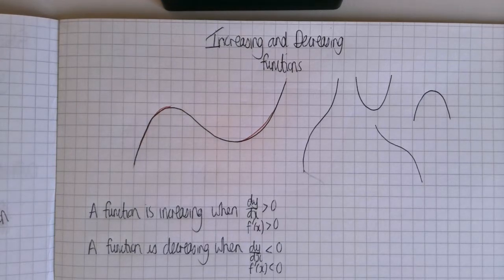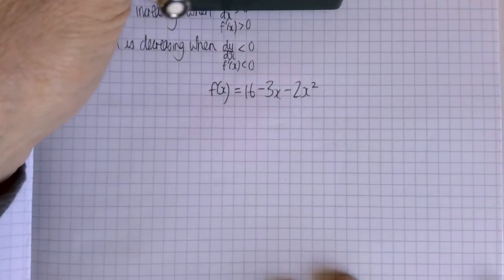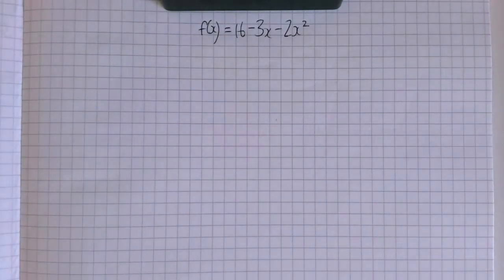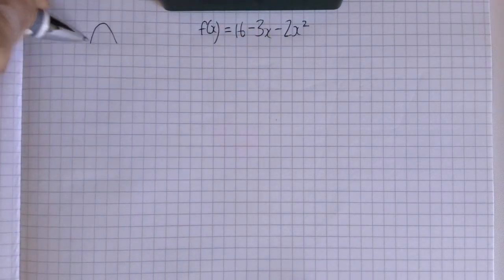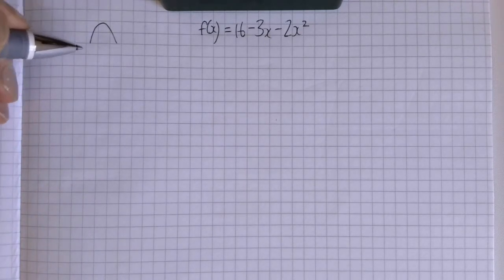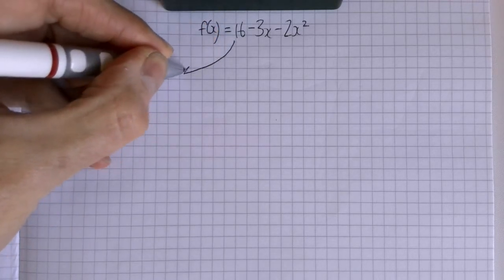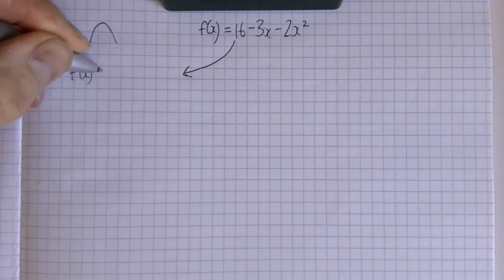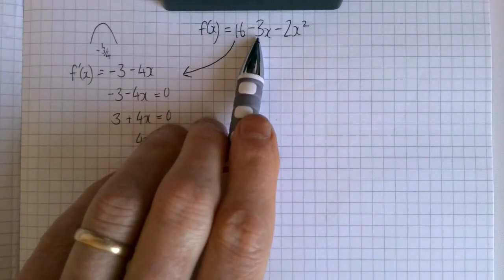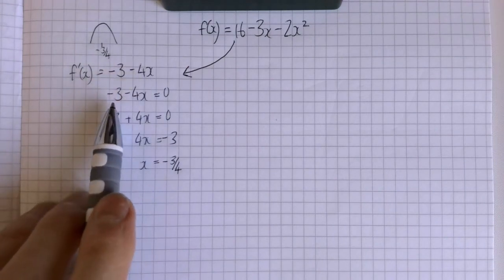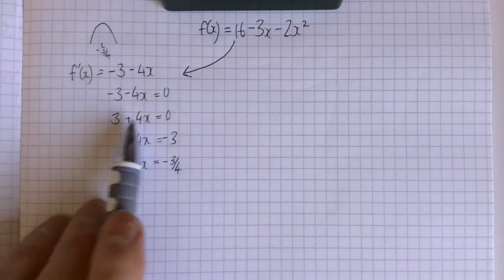We can use turning points to answer questions about increasing and decreasing functions. Let's look at a simple example — I want to ascertain when this function is increasing or decreasing. Firstly using turning points: I know this is an unhappy quadratic, so its turning point is going to be a maximum. Up to that point it will be increasing, and after that it will be decreasing. Differentiating: -3x becomes -3, reduce the power by 1, giving us that expression. Let's find the turning point by asking when that equals zero. Multiplying everything by -1, taking away 3, we get x = -3/4.